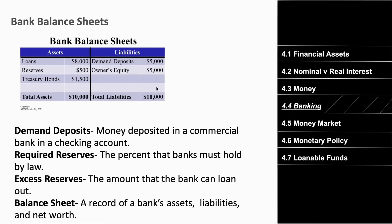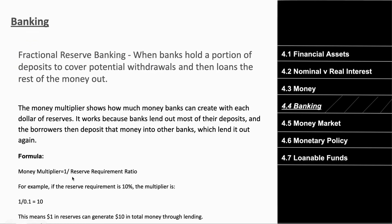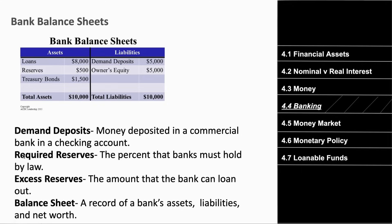A demand deposit is simply the money deposited in a commercial bank via a checking account. Required reserves is the percentage the bank must hold by law — if the reserve requirement ratio is ten percent and you deposited a thousand dollars, the required reserve is one hundred dollars. Excess reserve is the amount the bank can loan out — in this case nine hundred dollars. The balance sheet is a record of the bank's assets, liabilities, and total net worth.